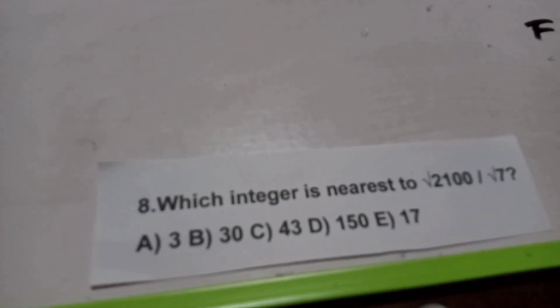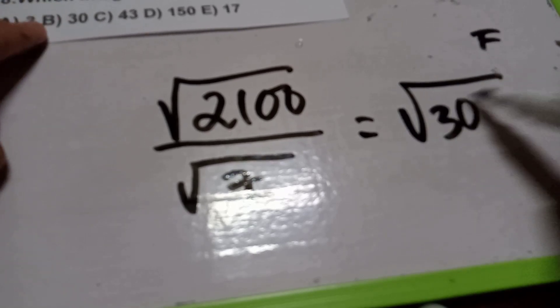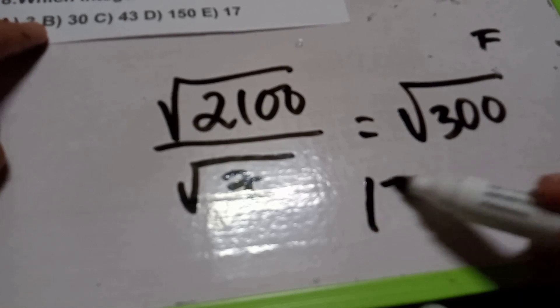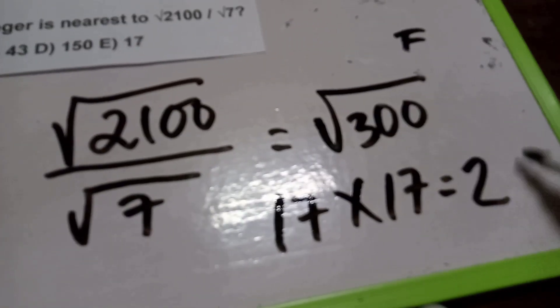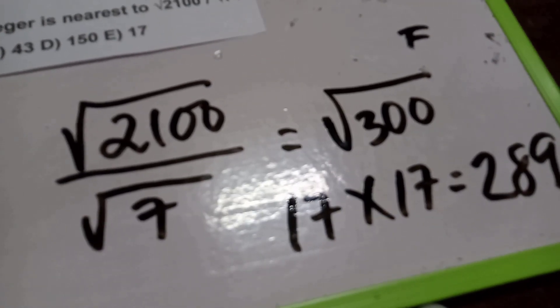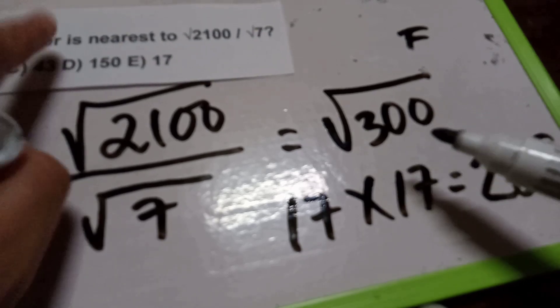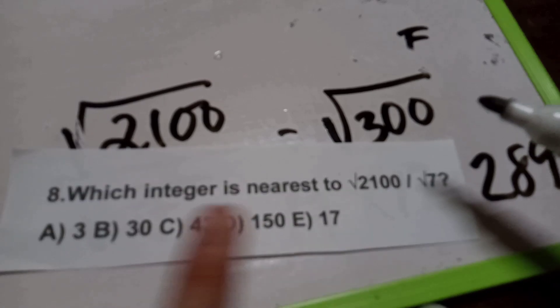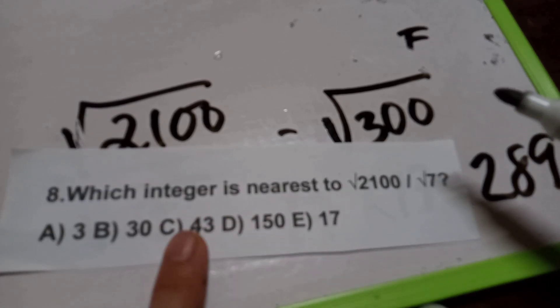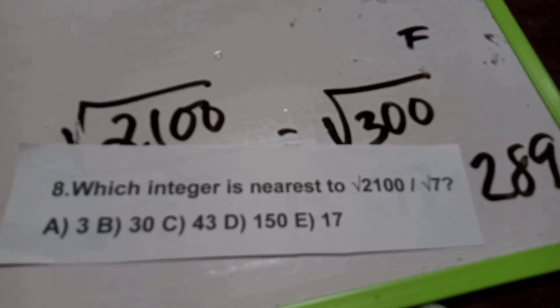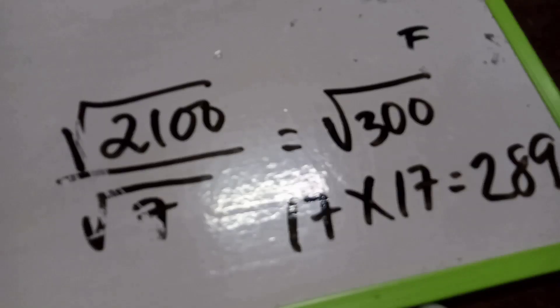Problem number eight: Which of the following integers is nearest to √(2100 divided by 7)? We simplify: 2100 divided by 7 equals 300. We need √300. We know 17 times 17 is 289, which is the nearest perfect square to 300. So √300 is approximately 17.3. Checking the answer choices, the answer is letter E.